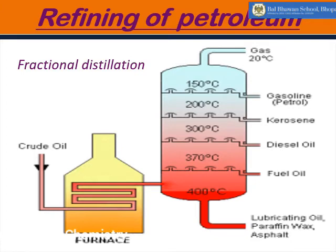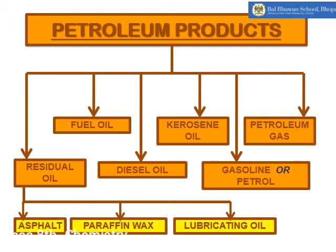Petroleum consists of many useful compounds. To separate them, we need to refine petroleum using the process of fractional distillation. In this process, crude oil is heated at 400 degrees Celsius, and with the help of a fractionating column, we separate the different components such as gasoline, kerosene, diesel, fuel oil, etc., depending on differences in their boiling points. The products obtained by fractional distillation include petroleum gas, petrol, kerosene oil, diesel oil, fuel oil, residual oil — and from residual oil we obtain asphalt, paraffin wax, and lubricating oil. Residual oil is the last product obtained because its boiling point is very high.